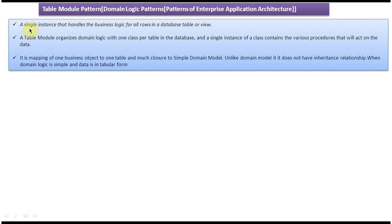The first explanation: a single instance that handles the business logic for all rows in a database table or view. The second explanation: a Table Model organizes domain logic with one class per table in the database, and a single instance of that class contains the various procedures that will act on the data.